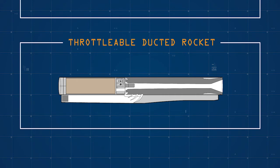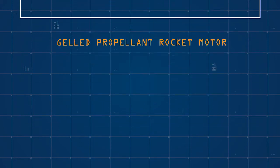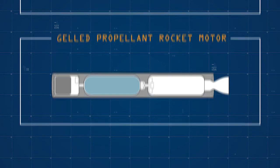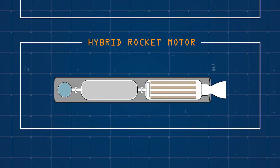Options also include an advanced air-breathing system for missions demanding long range and sustained high speed, or potential future candidates for tactical missile propulsion, like a rocket motor with gelled propellant, which operates similar to a liquid-fuelled rocket motor, or a hybrid rocket motor, which burns a solid fuel with a liquid oxidiser.